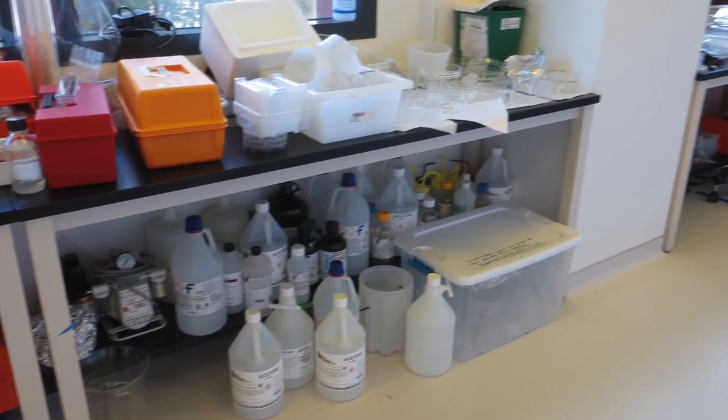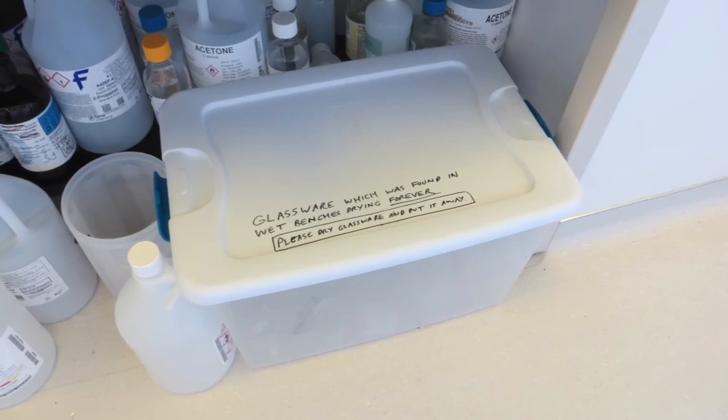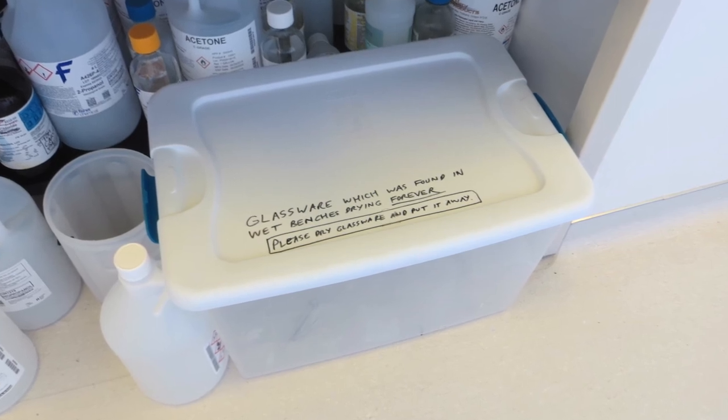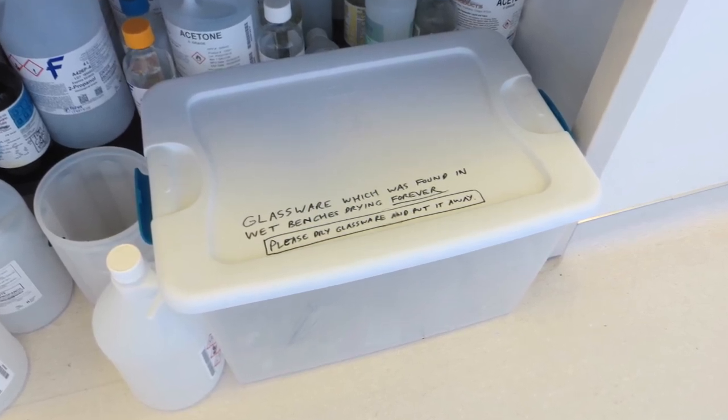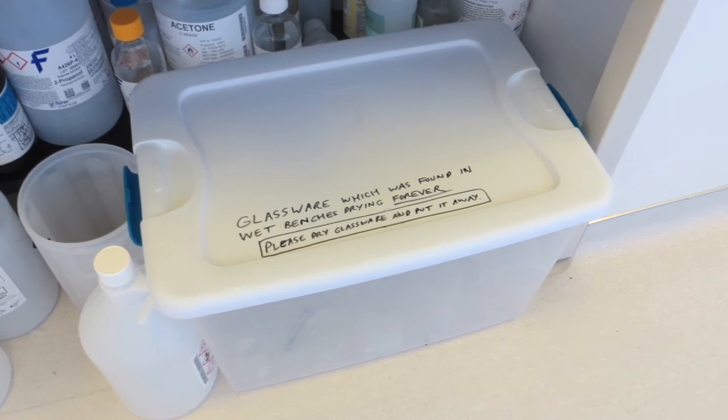Sometimes people leave beakers to sit out to dry and then they usually forget all about them and they sit there for days or weeks. So when that happens I usually take them and put them in this big white plastic bin that's just outside of the yellow room. Behind that bin are a bunch of empty bottles that I keep around just in case we need them for getting rid of some hazardous waste.